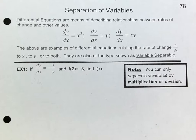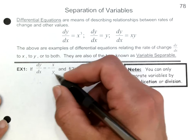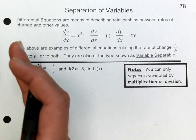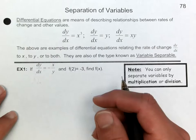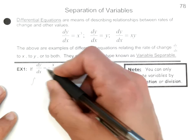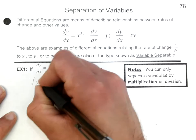Similar to what we did in lesson 77, we're going to multiply both sides times dx and then integrate. We're trying to get all the y terms to the left and all the x terms to the right. So we're going to multiply both sides times y, which will get rid of the y in the denominator.